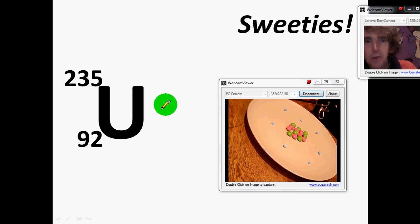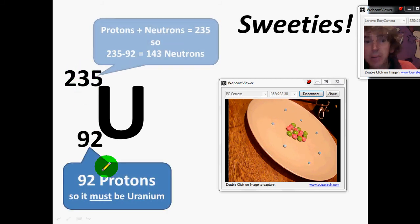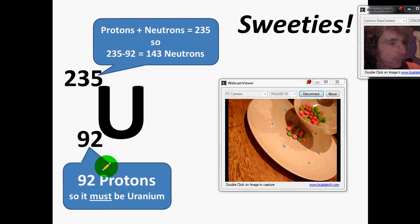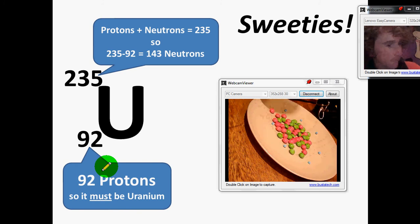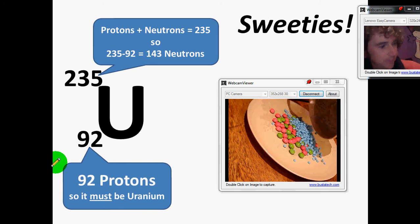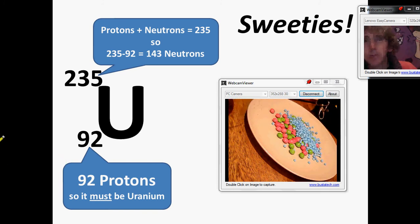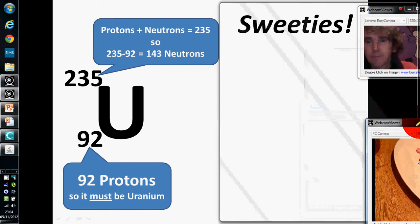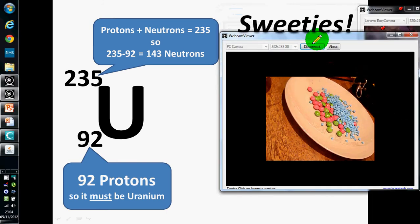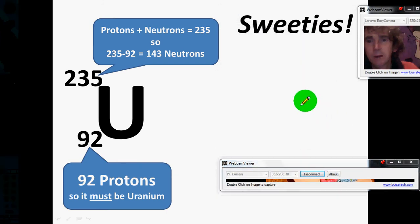This is uranium. It's got 92 protons and 235 is the mass number, which means it actually has 143 neutrons. So, let's see how we go. It's a bit of a mess. Something like that.